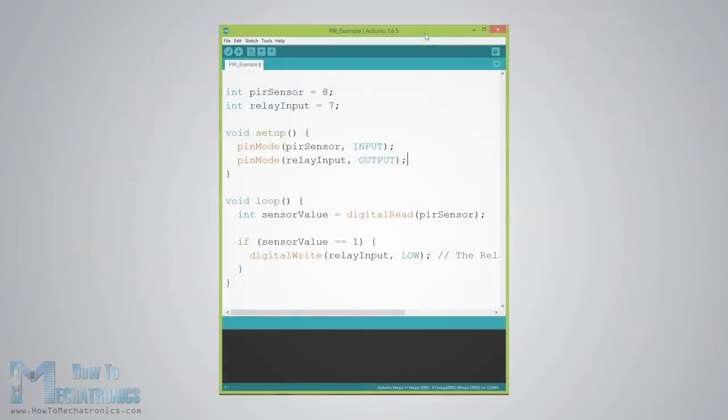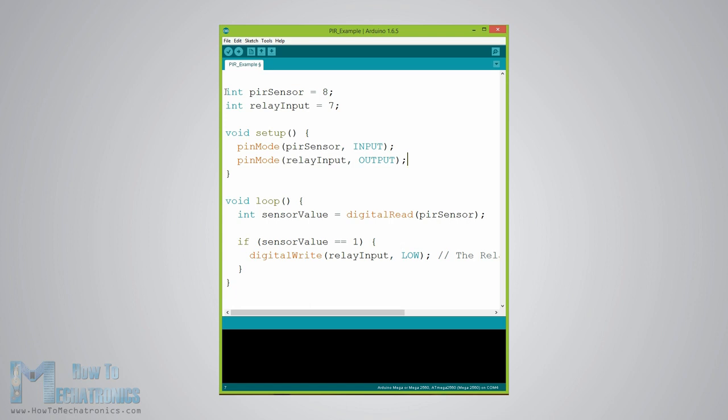Here's the Arduino code for this example. It's quite simple - we just need to define the PIR sensor pin as input and the relay pin as output. Using the digital read function, we will read the output of the sensor and if it's high or if an object is detected, it will activate the relay. For activating the relay module, we will send a logic low as the relay input pin works inversely.